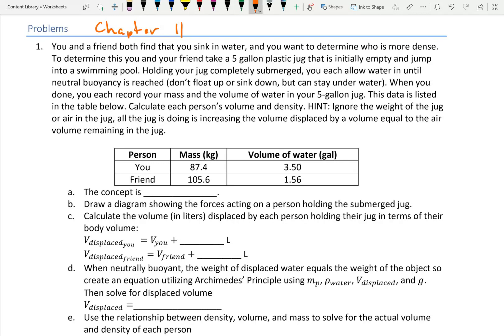To determine this, you and your friend take a five-gallon plastic jug that is initially empty and jump into a swimming pool. Holding your jug completely submerged, you each allow water in until neutral buoyancy is reached. That is, when you first jump in with that jug full of air, you're both going to float. Then you let water slowly go into that jug until you float lower and lower.